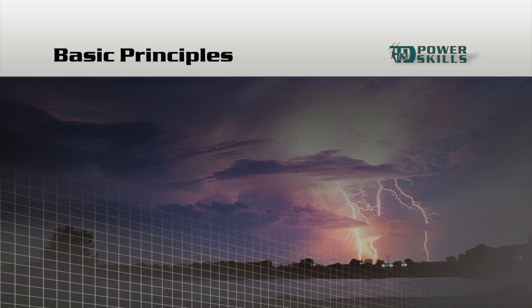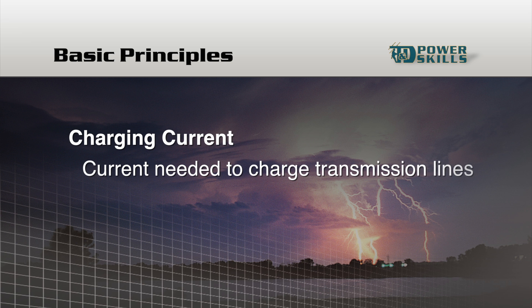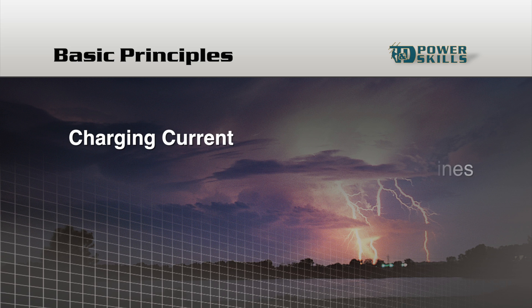Transmission lines also need a certain amount of current that does not perform useful work. The current needed to charge the lines, called charging current, does not perform work. Long, high-voltage transmission lines may draw a lot of non-working charging current in order to deliver working power from one location to another.